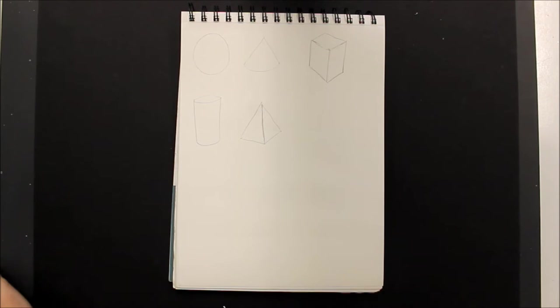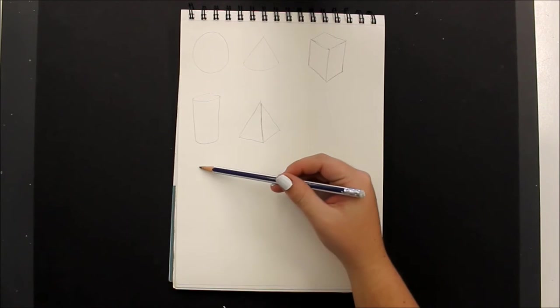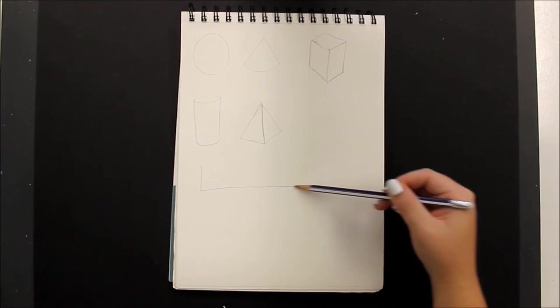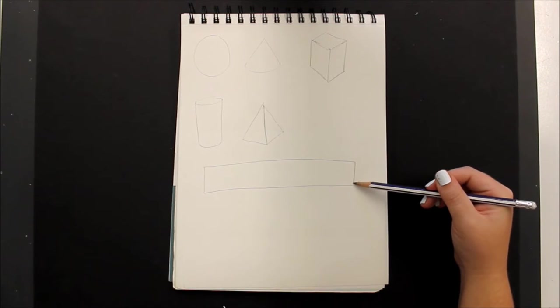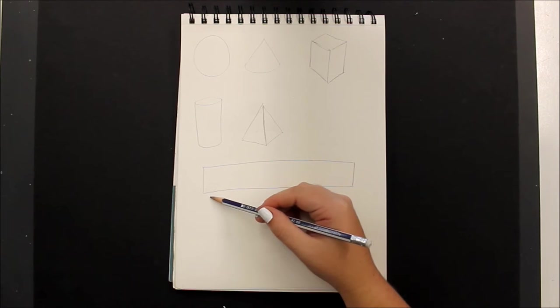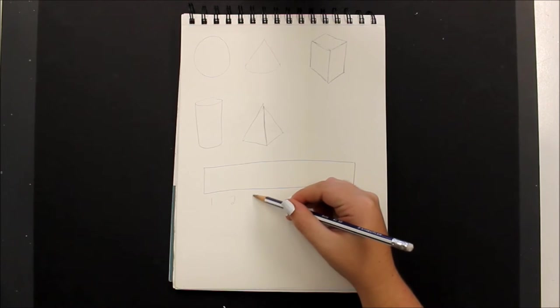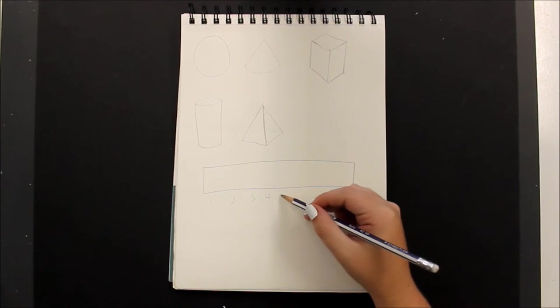Now, from here, what we're going to do is draw our rectangle for our value scale. Numbering 1, 2, 3, all the way to 10.